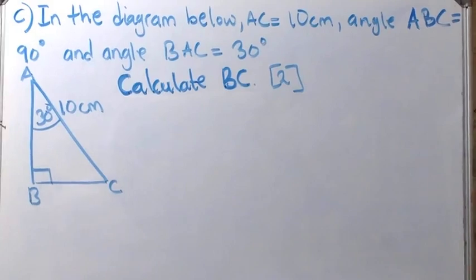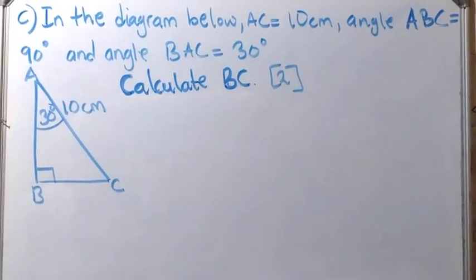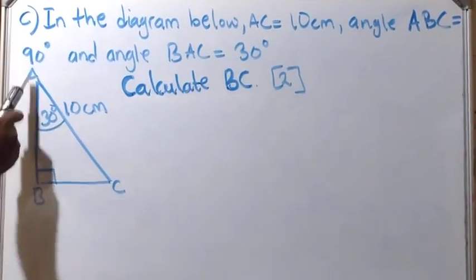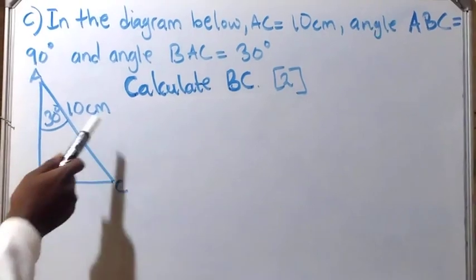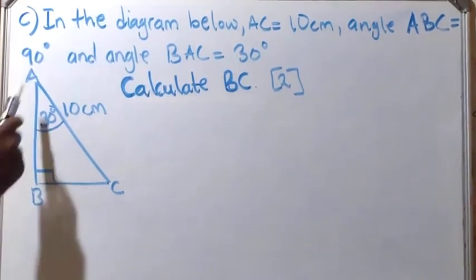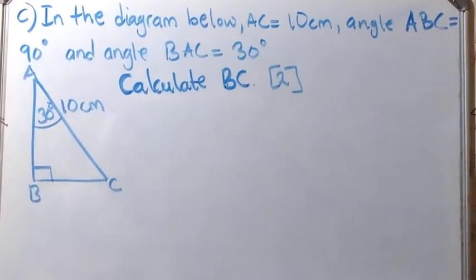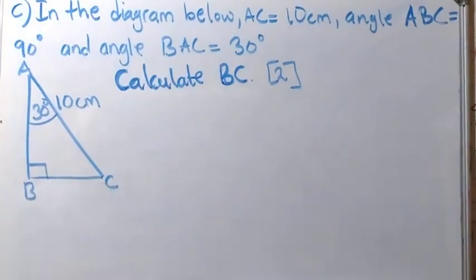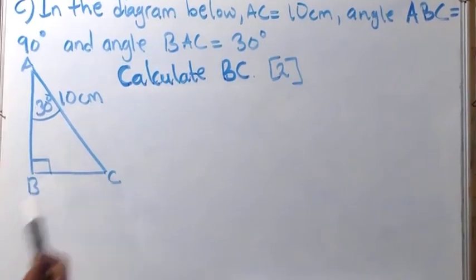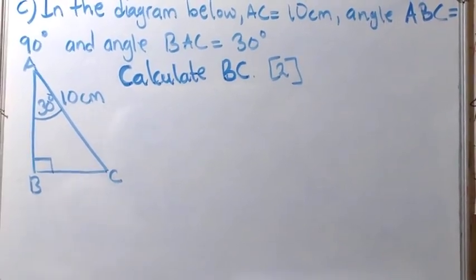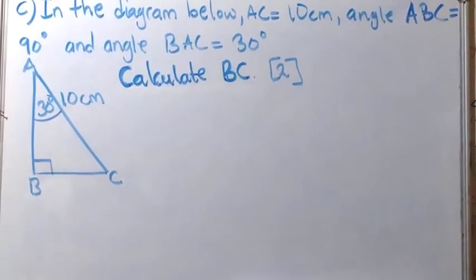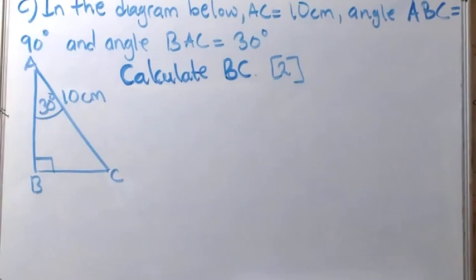Now we are on question 1C. The diagram shows a right triangle where AC is 10 centimeters, angle ABC is 90 degrees, and angle BAC is 30 degrees. The question asks you to calculate BC — find the length of BC. Take note of what you have been given: the side AC and the angle. We are going to apply what we call the trigonometric ratios.